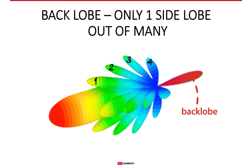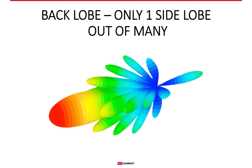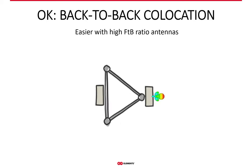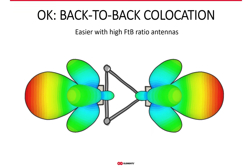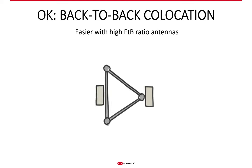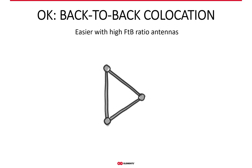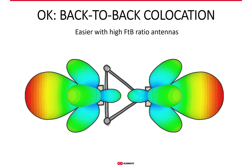Nevertheless, the back lobe is one of many side lobes that antennas used in the WISP industry typically have. So if the back lobe is one out of many side lobes, it's probably not so important. This is the typical error in interpretation of front-to-back ratio — it doesn't say anything about all the other side lobes. When two antennas are exactly back-to-back, which is quite a rare scenario, high front-to-back ratio can help decrease interference. But a typical antenna used in WISP networks has a lot of side lobes, and as soon as there are more links on a tower or co-located antennas are not exactly back-to-back, you are looking at noise issues from all the other side lobes.